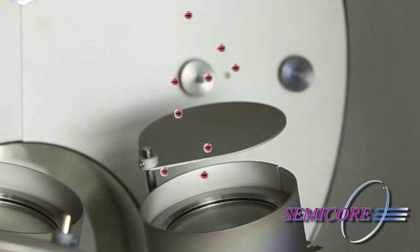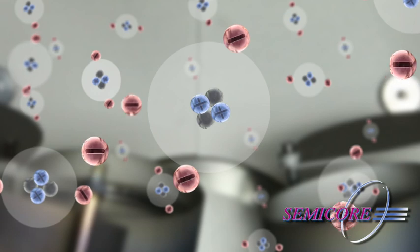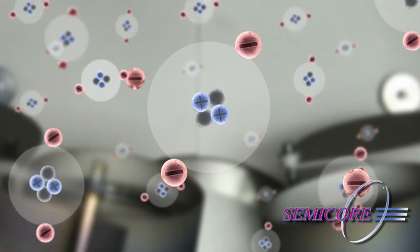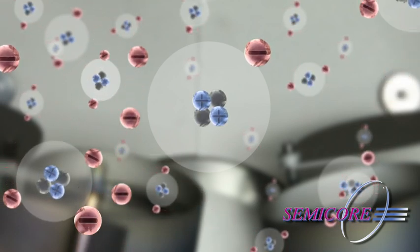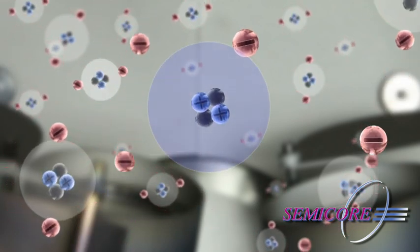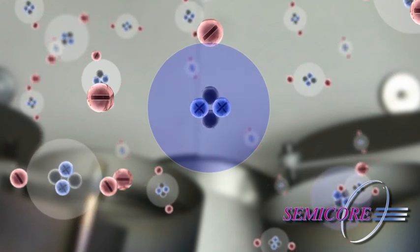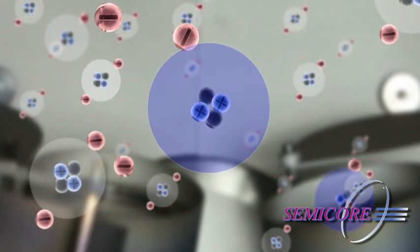This electrical potential will cause free electrons to accelerate away from the magnetron. When these electrons collide with a process gas atom, they strip the gas atom of an electron, creating a positively charged process gas ion.